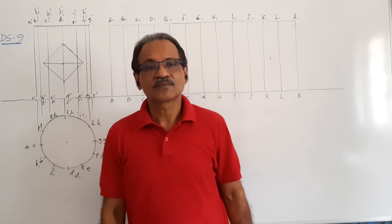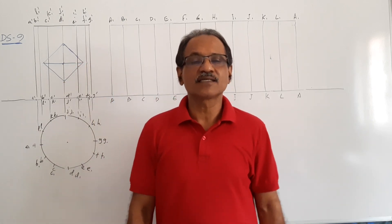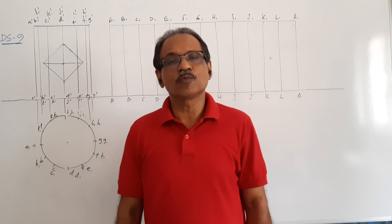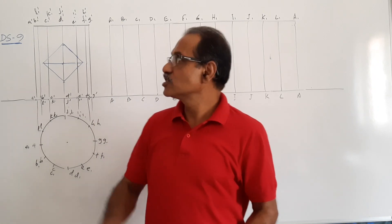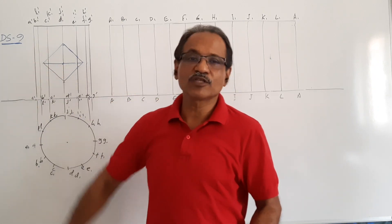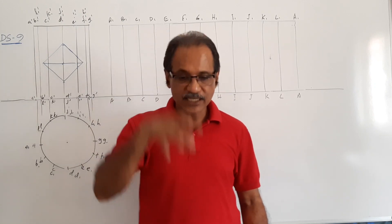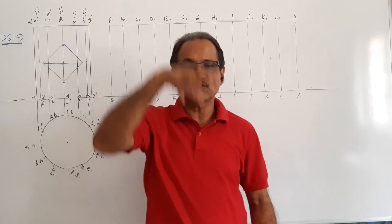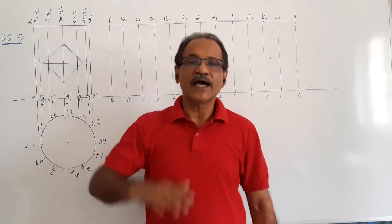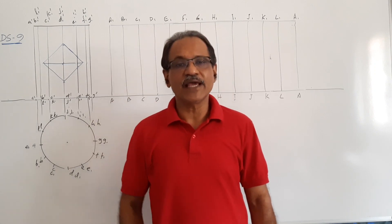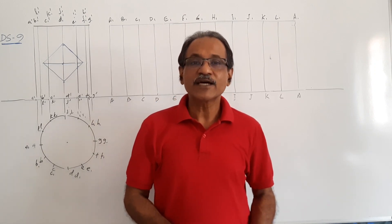Hi students, welcome to engineering graphics class. I'm Dr. Vinod Kumar, Adjunct Professor. This is development of surfaces, problem 9. A vertical cylinder whose diameter is 50mm and altitude is 70mm stands on its base on the ground.